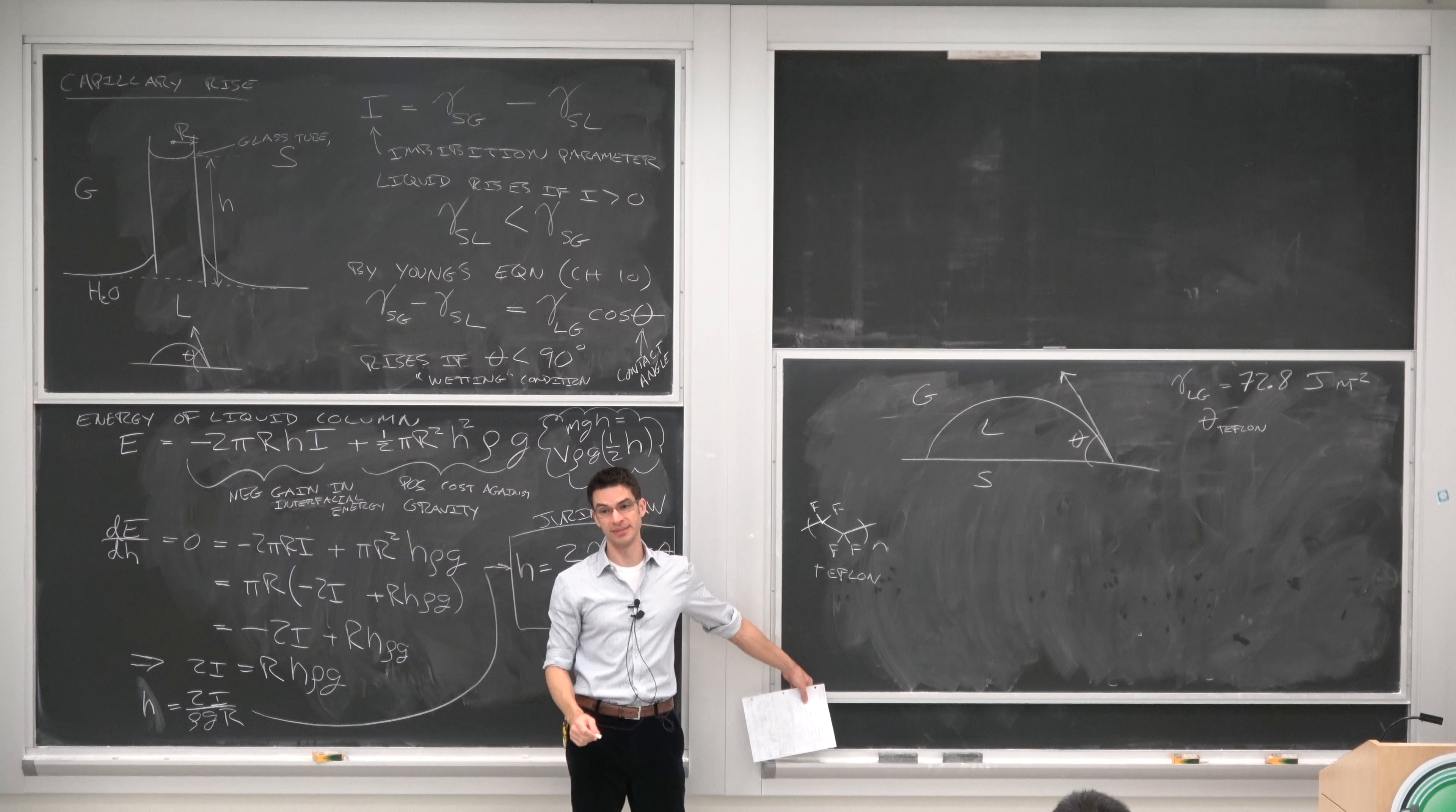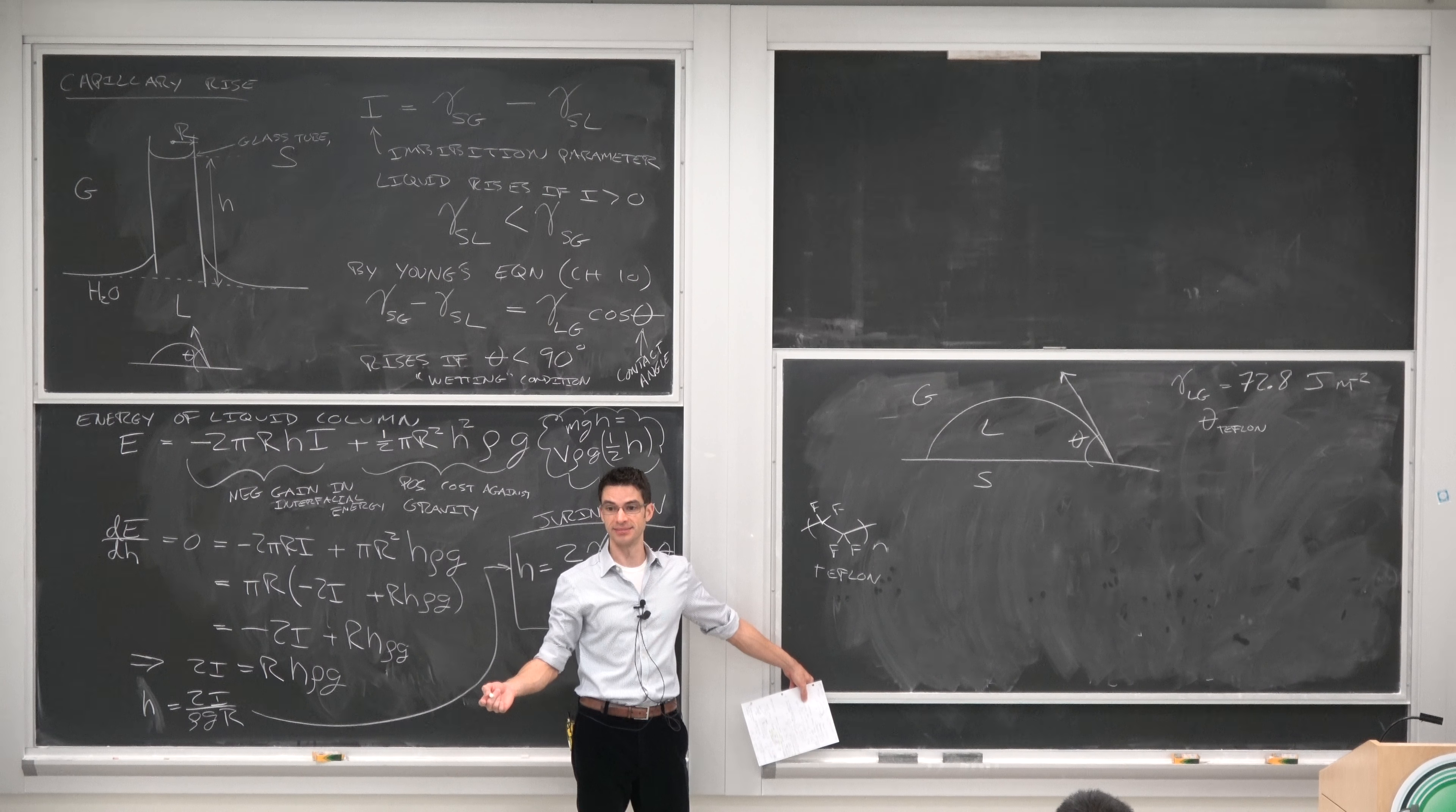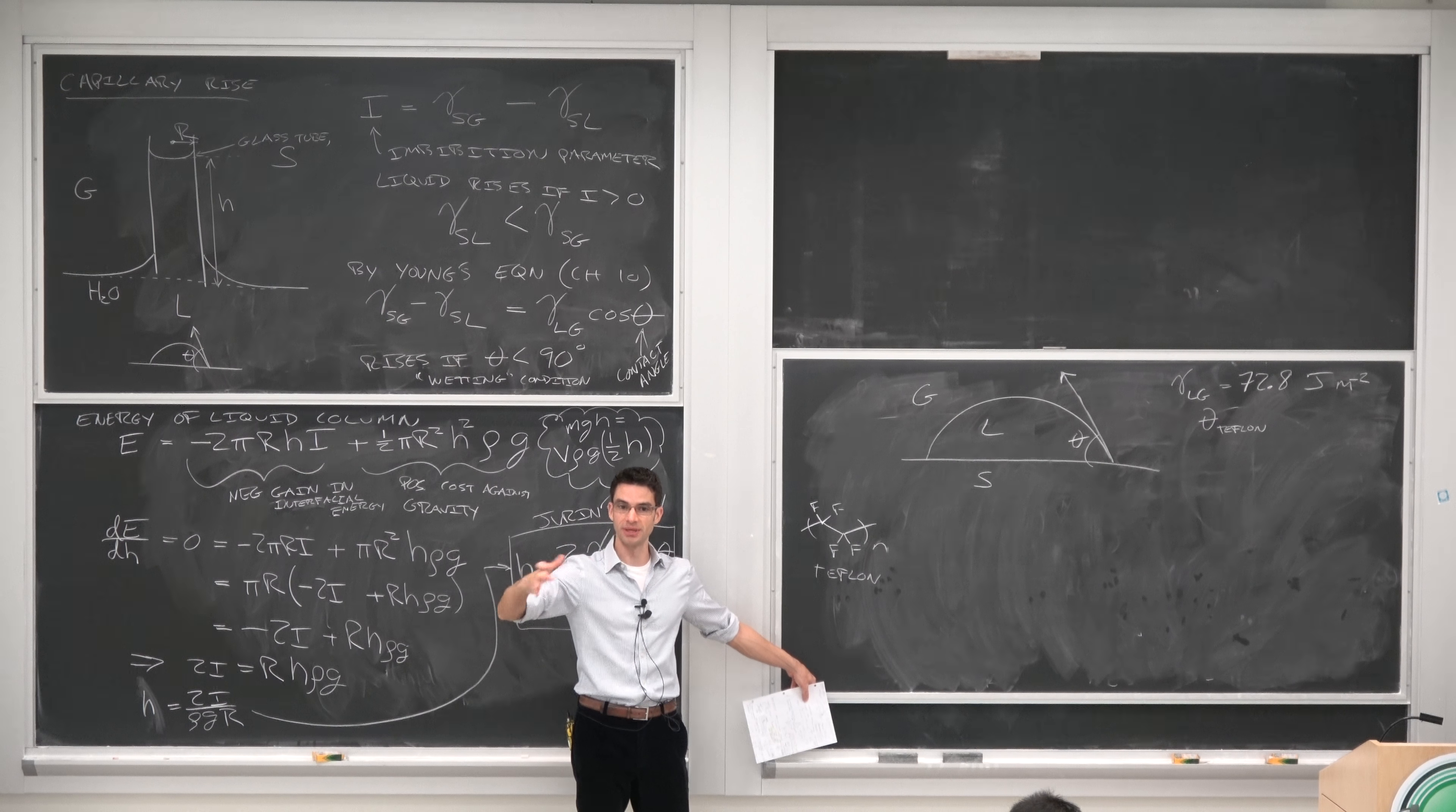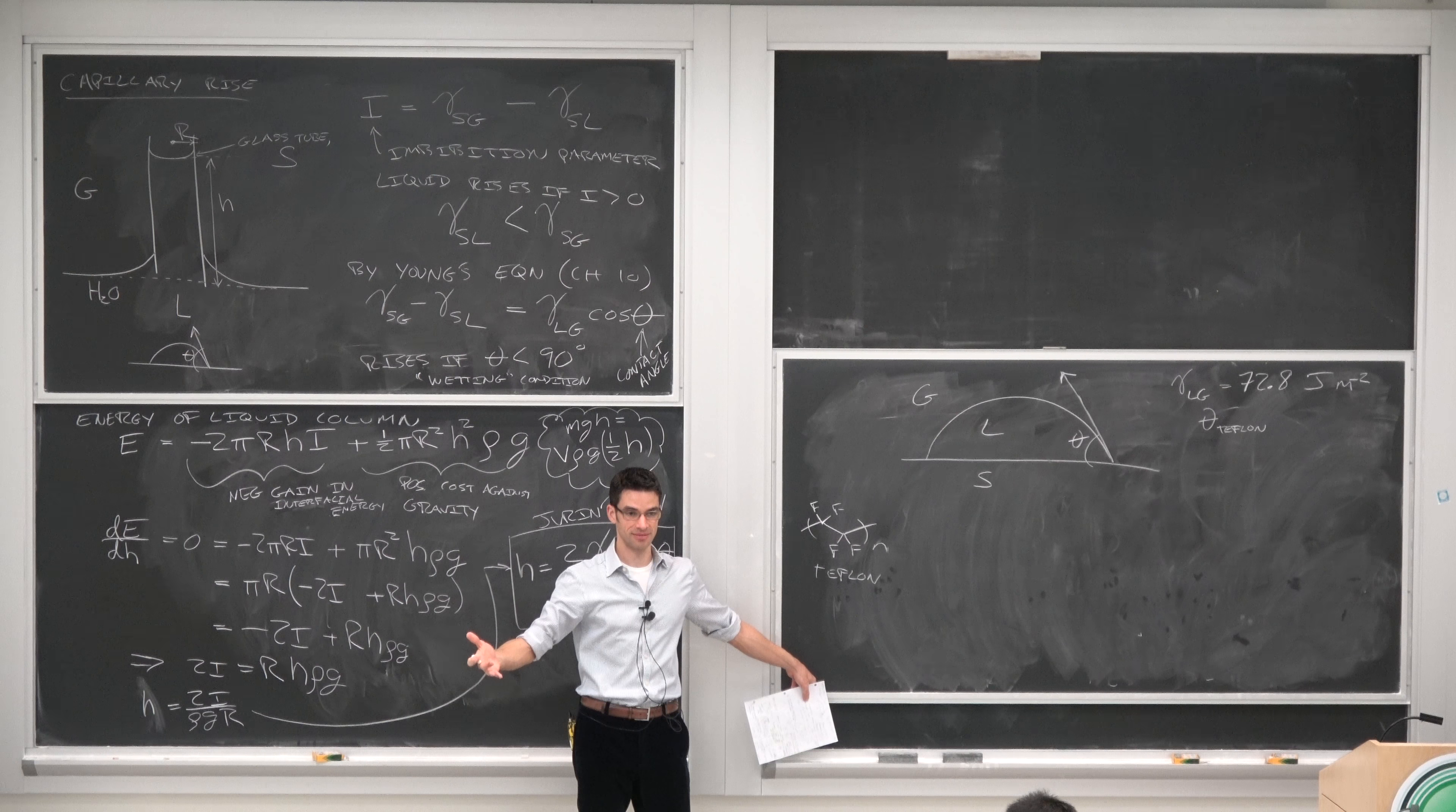What do we know about fluorine? It's very electronegative. What do we know about what does that do to its polarizability? It gives it a very low polarizability, which means that if a liquid film is on it, it doesn't induce a strong dipole in Teflon, and therefore it doesn't want to interact with Teflon.